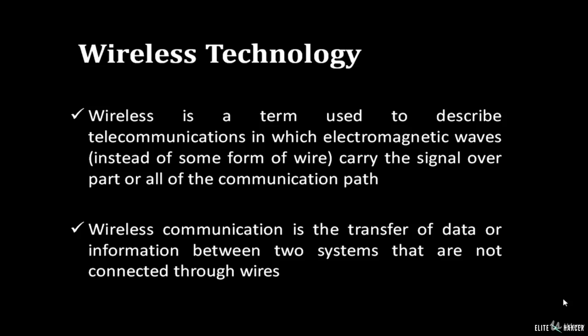Wireless is a term used for describing telecommunication in which electromagnetic waves carry the signal over a part or all of the communication. In other words, wireless communication is the transfer of data or information between two systems that are not connected through wires.